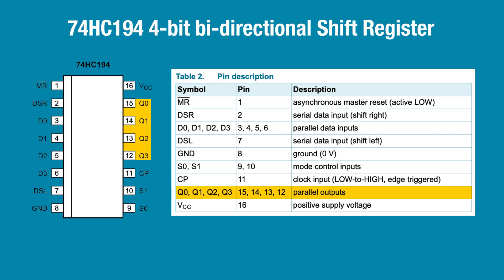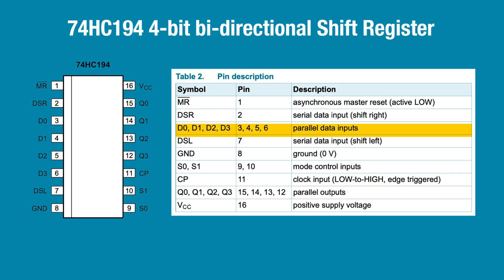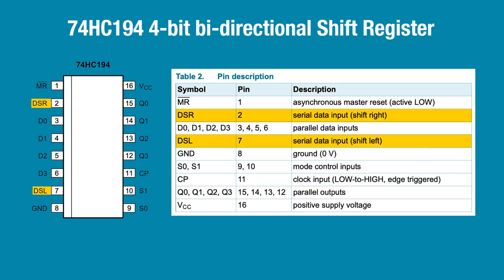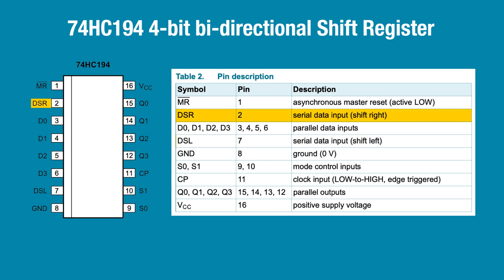For this demo, I'm using a 74HC194 4-bit bidirectional shift register. This shift register has four parallel outputs, four parallel inputs, and two serial inputs — one that shifts left and one that shifts right.